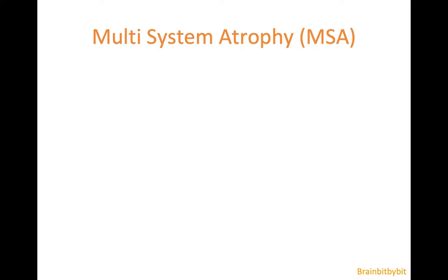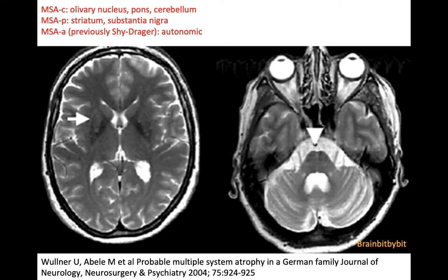I will show images of multi-system atrophy. Multi-system atrophy is a neurodegenerative disease that is difficult to diagnose clinically, and unfortunately the imaging findings are not clear-cut either.